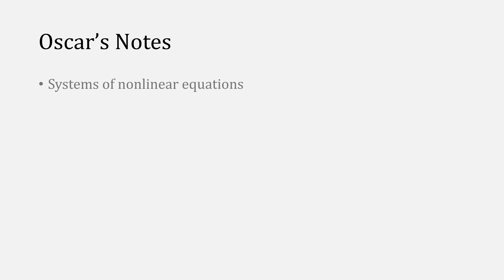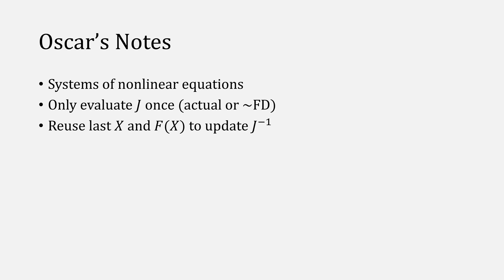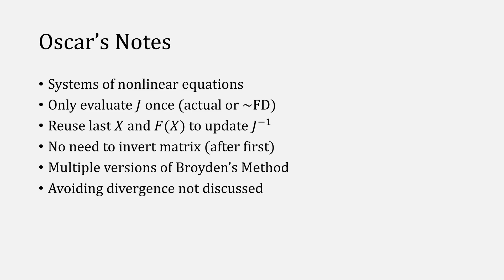In summary, Broyden's method can be used to solve systems of nonlinear equations with a quadratic order of convergence, and you only need to evaluate Jacobian once, or approximate it using finite differences. You also reuse the last x and last f in order to update Jacobian inverse. There's also no need to invert a matrix after the first time, and that there are multiple versions of Broyden's method. His approach to avoid divergence I am not discussing in this lesson.